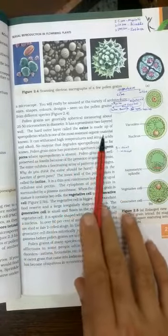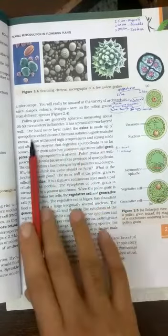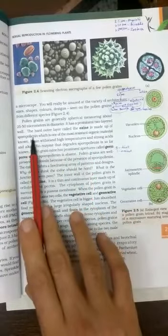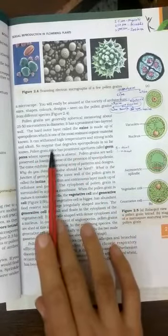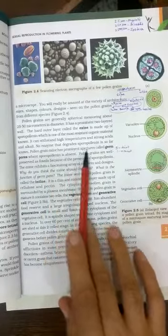Outer wall is exine and is made up of sporopollenin. And is resistant to the organic material. This comes a lot in the board exam that exine is made up of what and why is it resistant. This compound provides resistance. It can bear high temperature, strong acids and alkali. No enzyme is able to digest it.